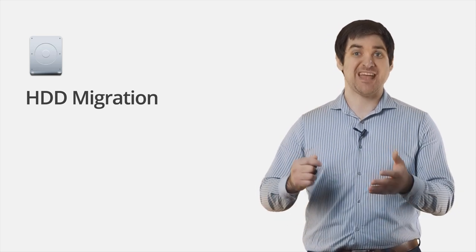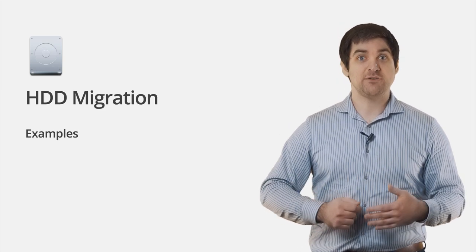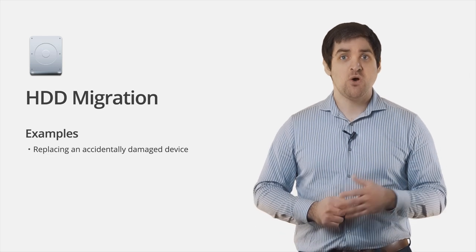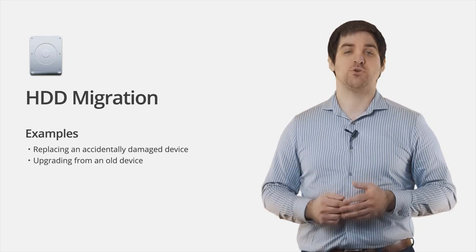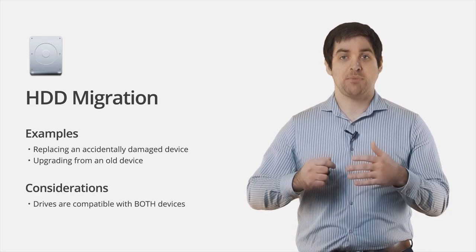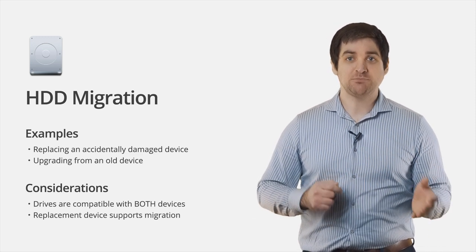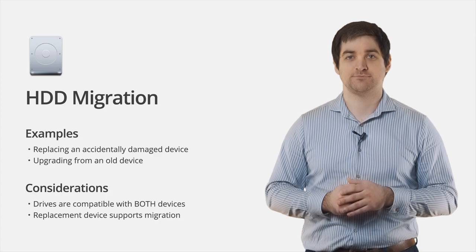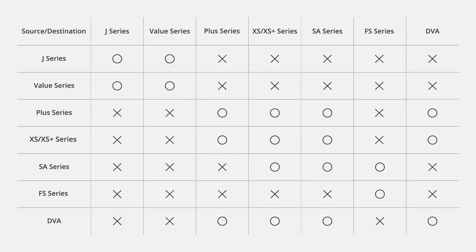First up is hard drive migration — taking the drives out of your existing device and placing them into a new one. This is often the fastest and simplest way to migrate your data. A couple of examples of when you might use this method are if you're replacing a device that was accidentally damaged, or if you purchase a new Synology device to upgrade your existing one. Before moving forward, make sure that the drives are compatible with both NAS devices and that the replacement NAS supports this type of migration. When migrating to an identical model, the system will just boot up normally.